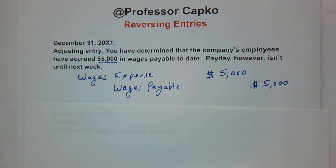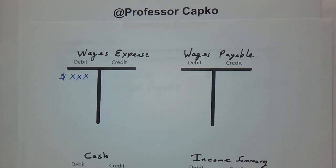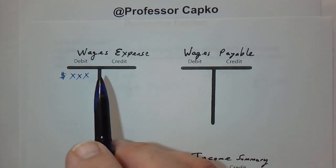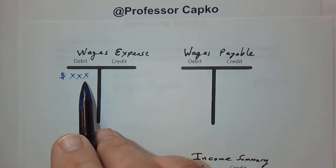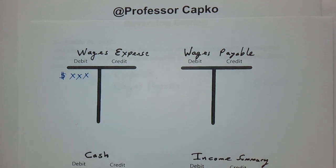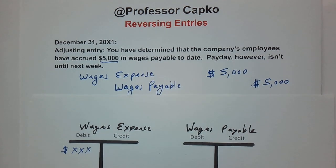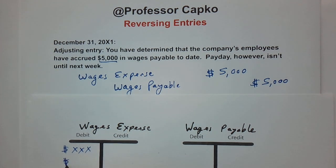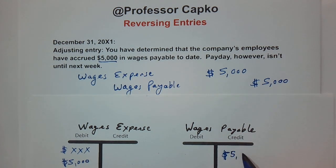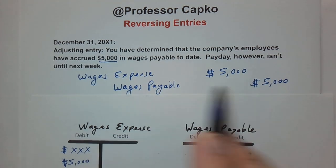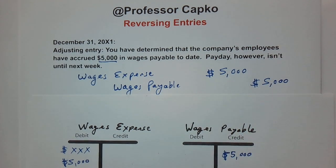Let me show you how those transactions would look on the T-accounts, which we're going to treat as if they are the ledgers. We've got a wages expense account and we're going to have some sort of balance sitting in there already in the debit column — that's for all the wages that have been paid throughout the year. We have just debited wages expense for $5,000, and we're going to credit wages payable. This is a liability account, so it goes up with credits. We've now recorded this transaction and our books balance.